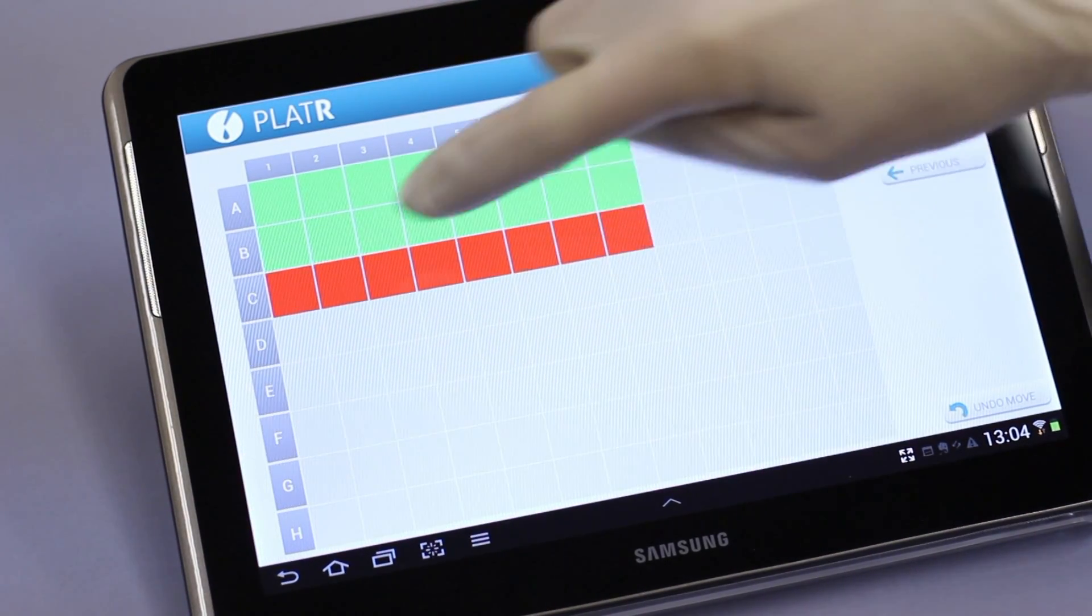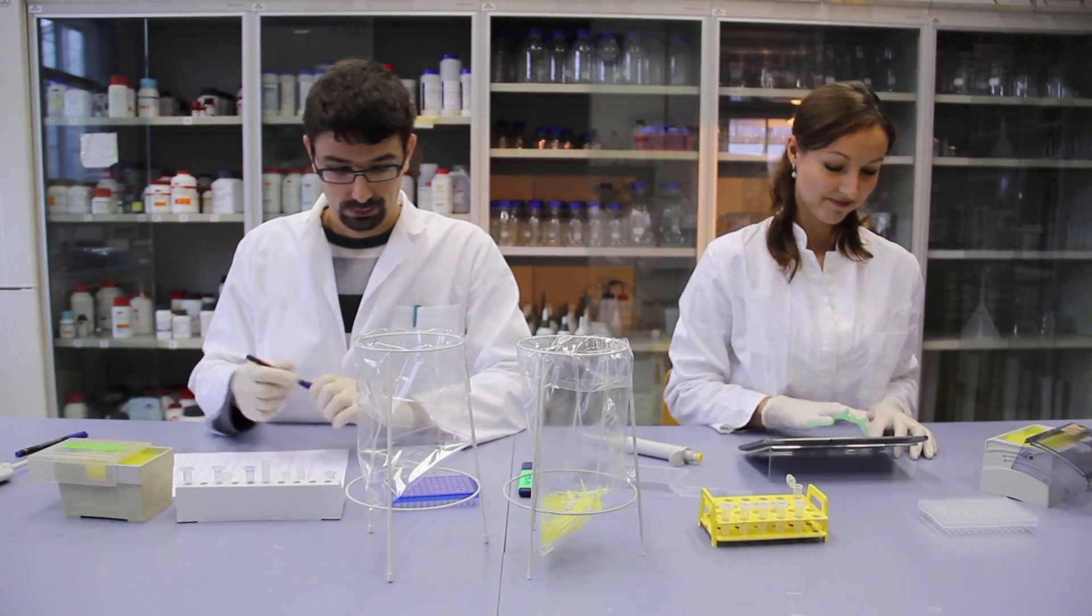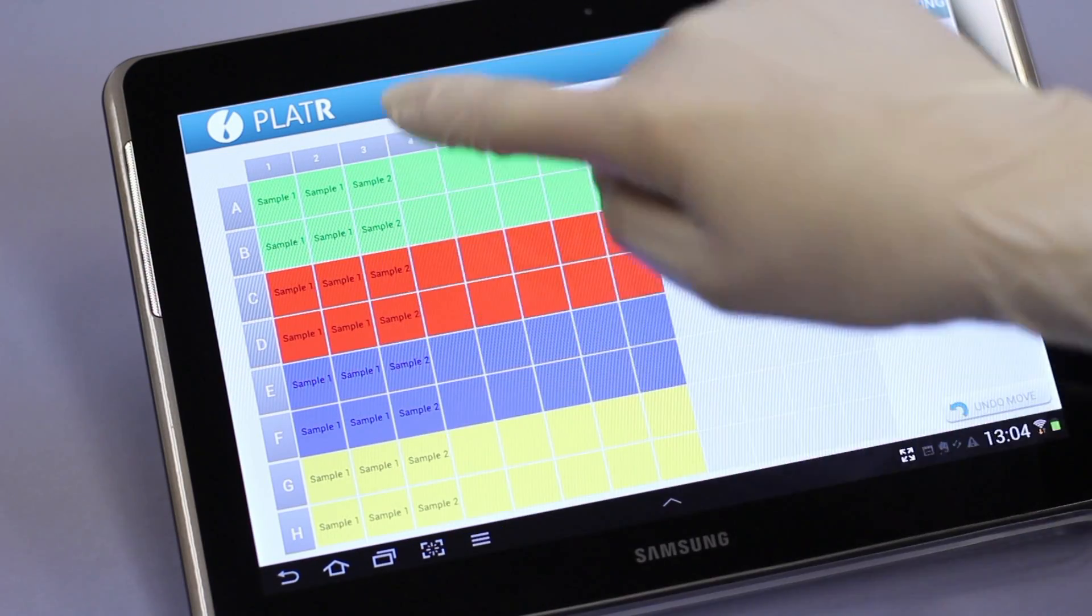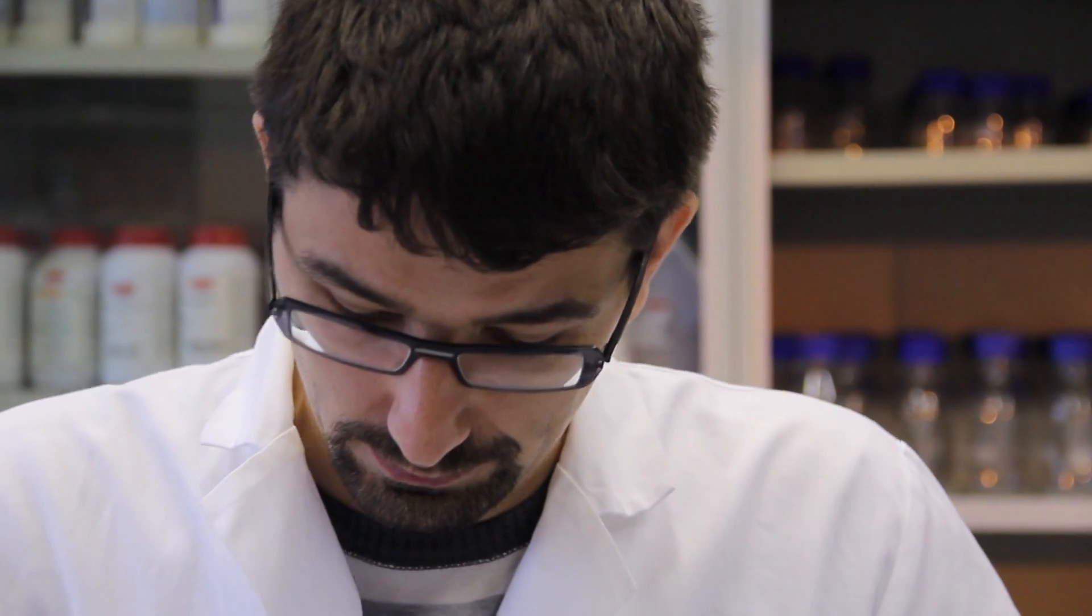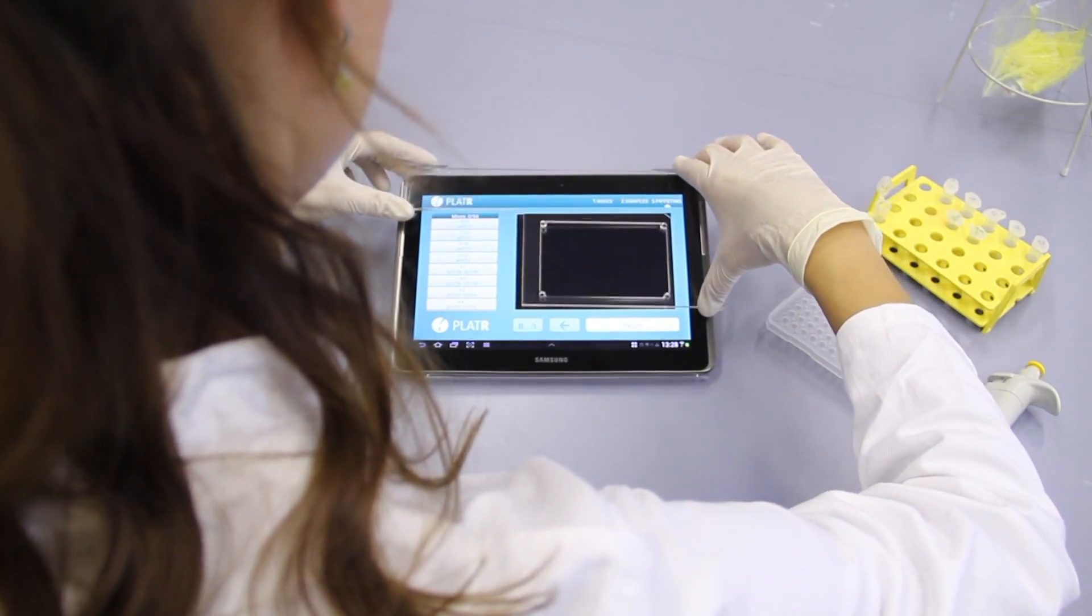Create your pipetting plan using simple swipe motions. It's fast and easy. After organizing your reagents on the plate, simply distribute your samples and Platter will record these motions and transfer them into a pipetting plan. Now you're immediately ready for pipetting.